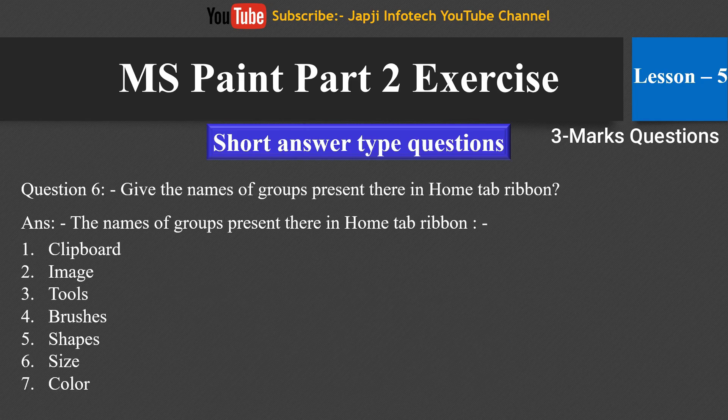The sixth question is: give the names of the groups present in the home tab ribbon. The names of the groups present in the home tab ribbon are: first, clipboard; second, image; third, tools; fourth, brushes; fifth, shapes; sixth, size; and seventh, color.